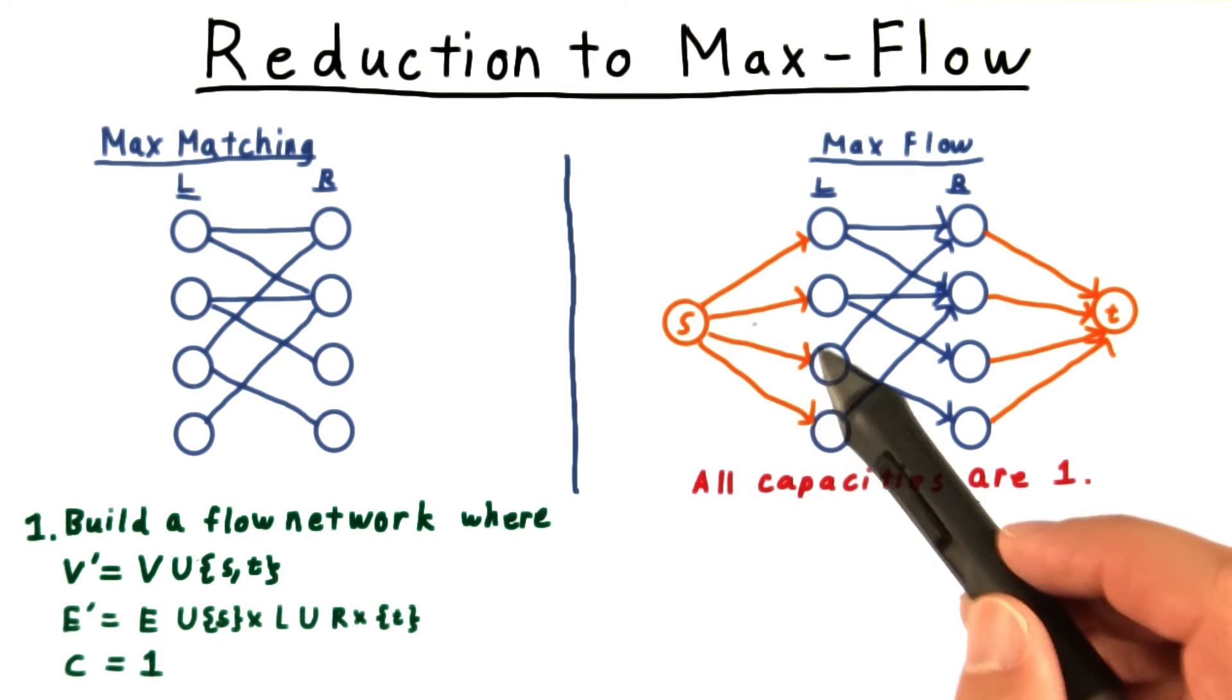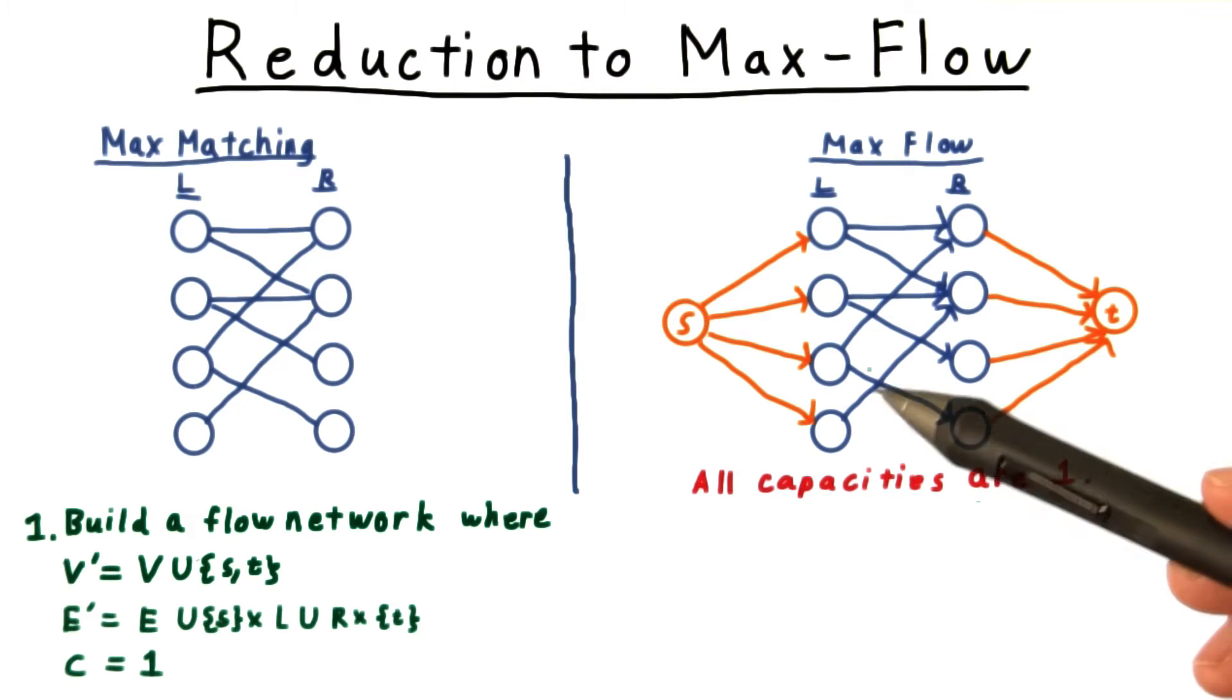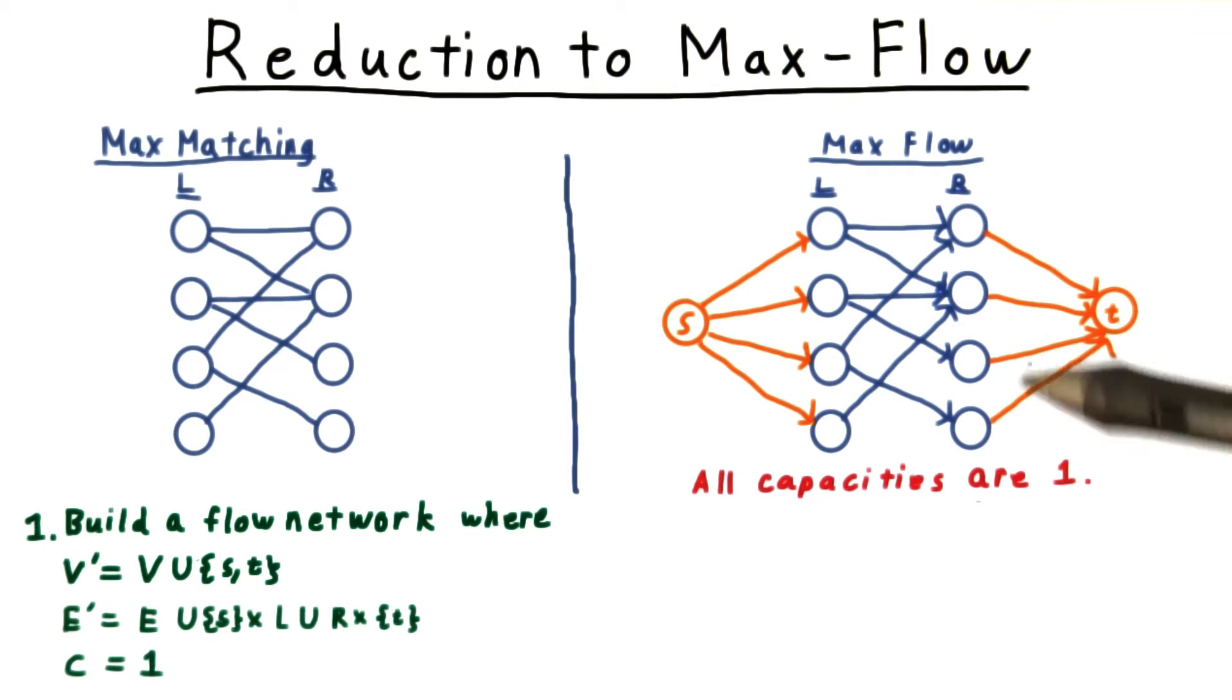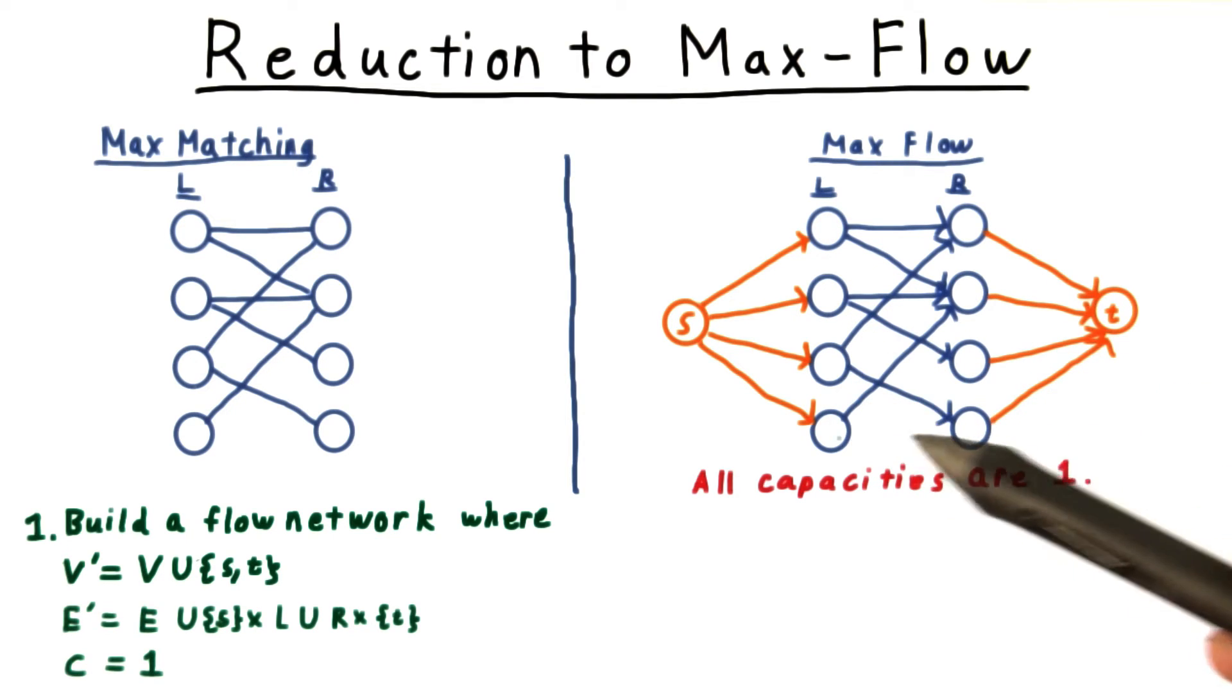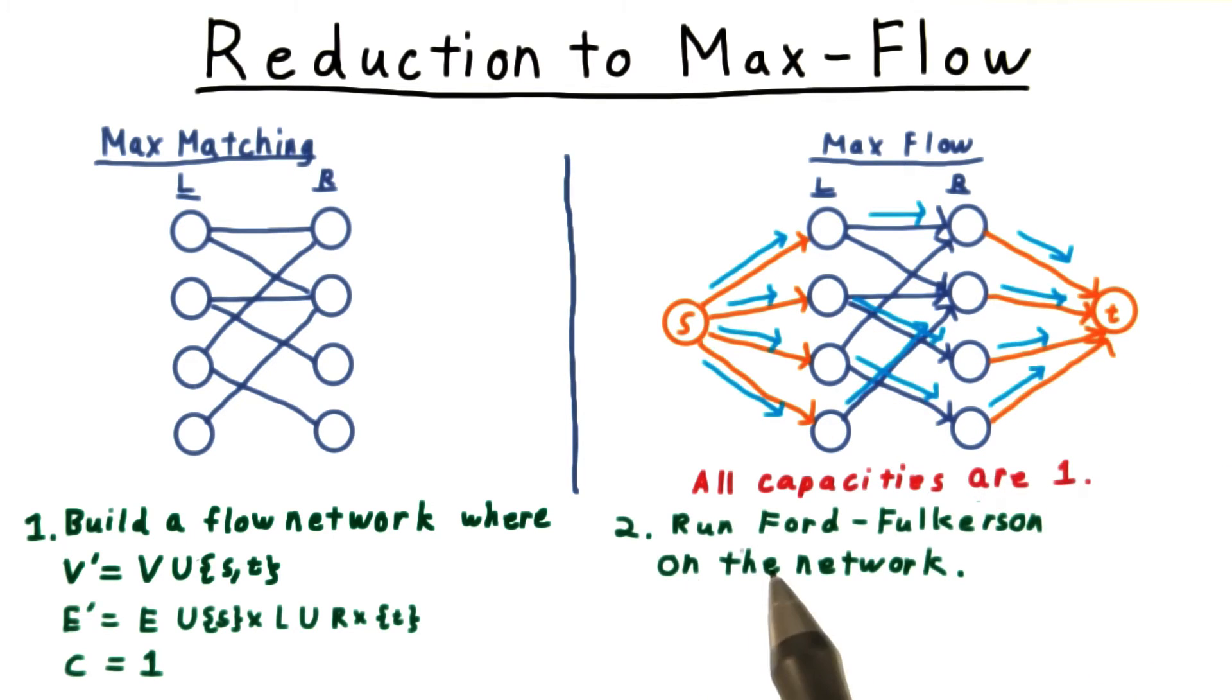Setting the capacities of the new edges to one is important to ensure that flow from or to any vertex isn't more than one. We only want to match each of these vertices once. Having constructed the graph, we run Ford-Fulkerson on it, and we return the edges with positive flows as the matching. Actually, all edges will have flows 0 or 1, as we'll see.